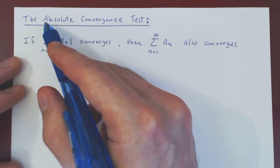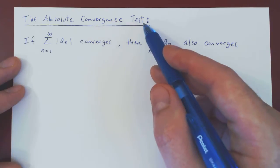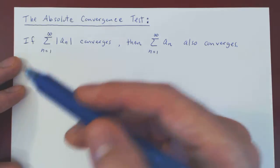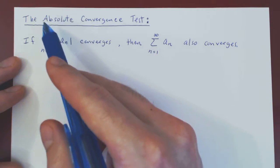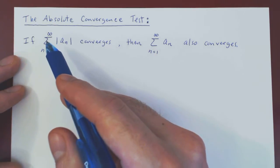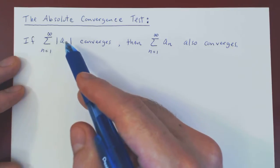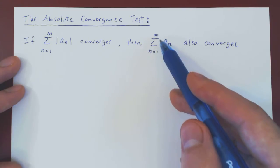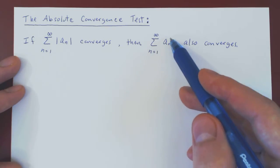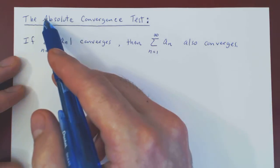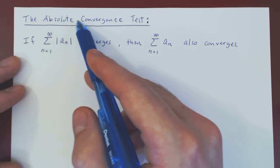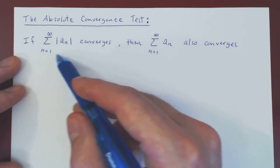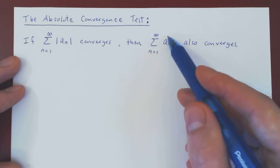You can see why we use the word absolute convergence — there are actually two reasons. The first is because of the absolute value itself. The second is that this is a stronger form of convergence, because the convergence of the series of the terms with the absolute value implies the convergence of the series of the terms without it.